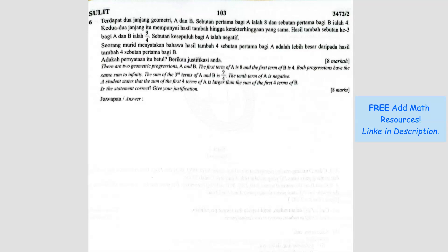Question number 6. There are two geometric progressions, A and B. The first term of A is 8 and the first term of B is 4. So we have two sequences here. The first number in sequence A, let's call it A1, is 8, and the first number in sequence B is 4.